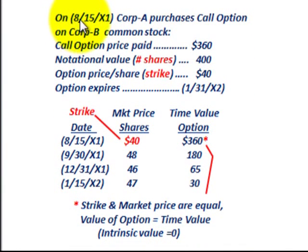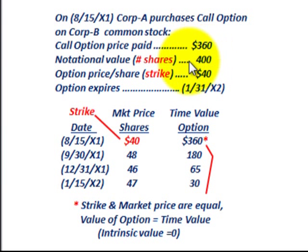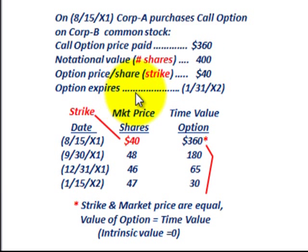Let's look at our example. Starting 08/15/X1, Corporation A purchases a call option on Corporation B's common stock, paying $360,000 for it. This option gives them the right to buy Corporation B's stock in the future. The notional value — the number of shares Corp A has the right to buy — is 400 shares. The strike price is $40 per share, and the option expires on 1/31/X2.